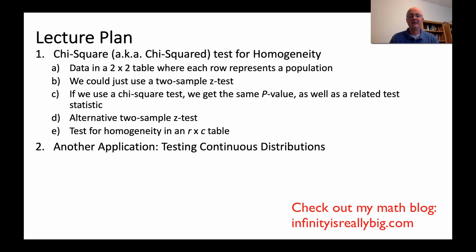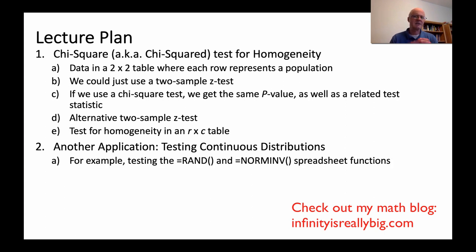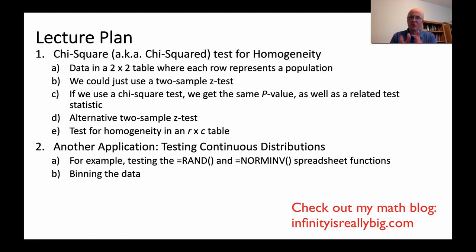Another application is testing continuous distributions. For example, we could test whether a spreadsheet is doing a good job generating random numbers from a normal distribution — say, a standard normal distribution with a mean of zero and a standard deviation of one. We can use the RAND and NORMINV spreadsheet functions to generate random samples and see if the spreadsheet is doing a good job. We need to bin the data, because the chi-squared test involves finite sums. If we are going to test a continuous distribution, we need to group the data into bins or classes and do counts. But that brings up a question: how do you decide what the bins should be? The answer is not always clear.